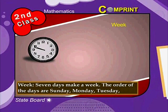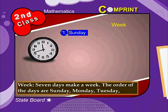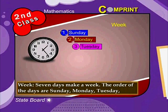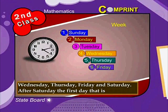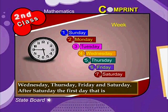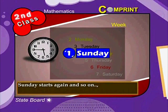Week: Seven days make a week. The order of the days are Sunday, Monday, Tuesday, Wednesday, Thursday, Friday, and Saturday. After Saturday, the first day — Sunday — starts again, and so on.